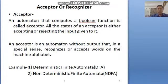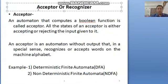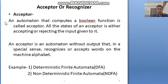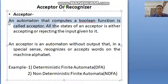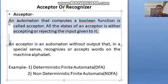These automaton have two categories. One category is the acceptor or the recognizer. Acceptor is an automaton that computes a boolean function called an acceptor. All the states of an acceptor are either accepting or rejecting the given input.